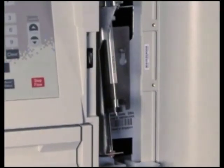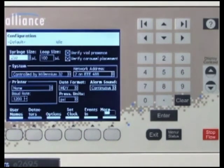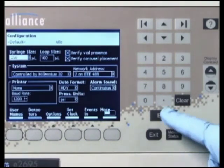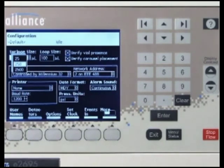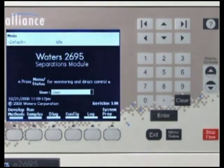If the syringe you installed is a different size, you must change the syringe size on the configuration screen. To do this, press the configure screen key on the main menu to display the configuration screen. The syringe size field is highlighted. Press enter and use the arrow keys to select the correct syringe size, then press enter. Press the exit key to return to the main menu.